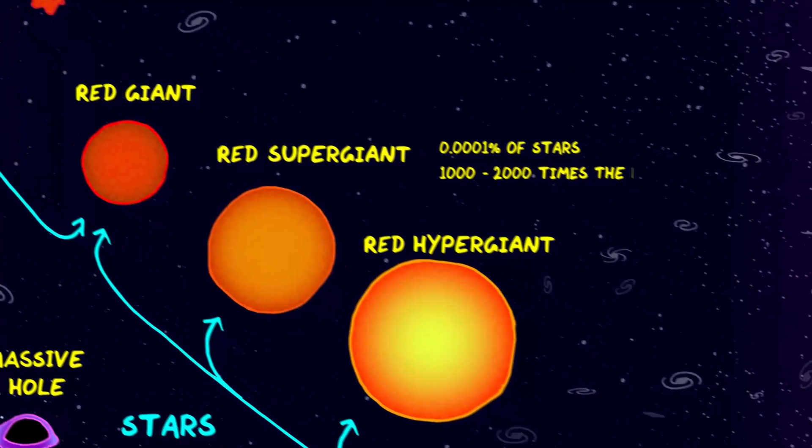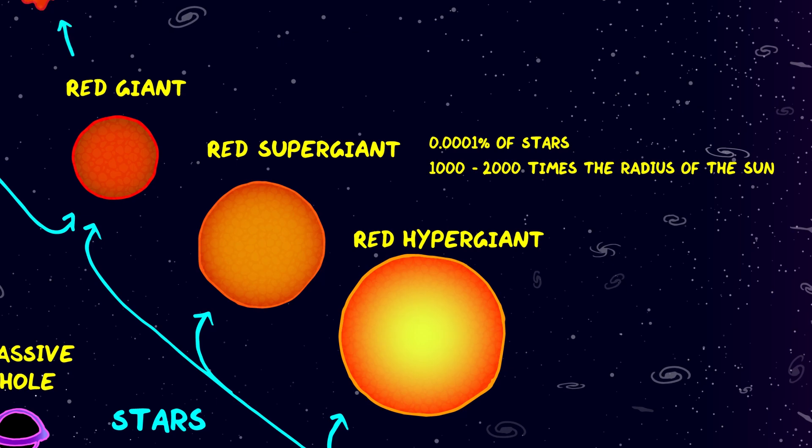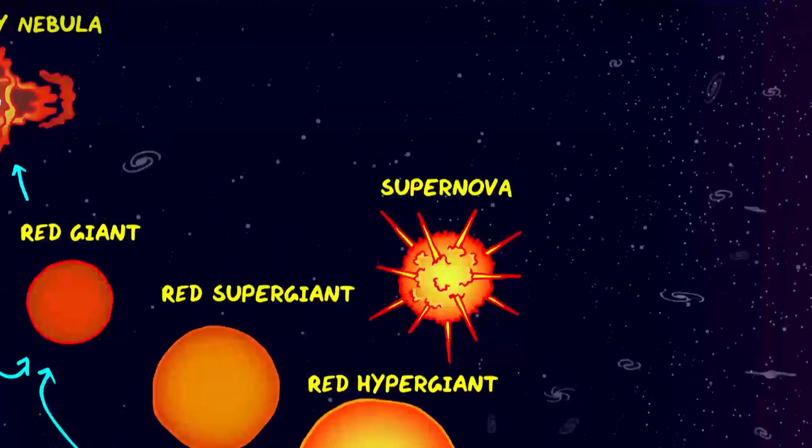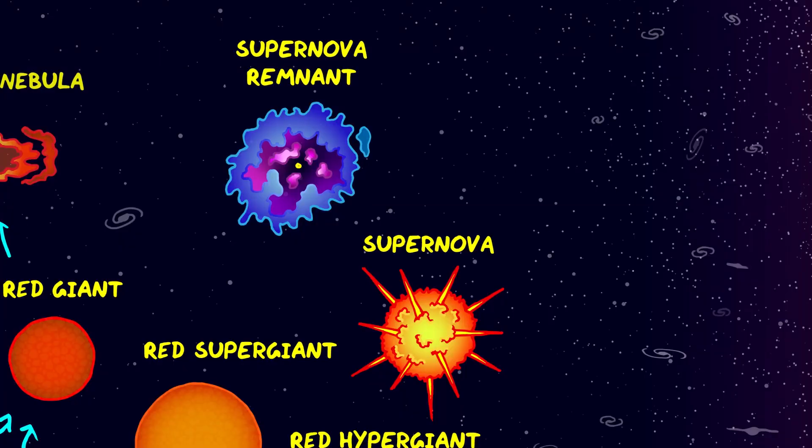For the truly massive stars, a different cosmic journey awaits. The red super and hypergiants have much shorter lives of only 3 million to 100 million years. These colossal stars with radiuses 100 to 2000 times that of the Sun end their lives in a humongous explosion known as a supernova, where they throw off their outer layers into a nebula known as a supernova remnant, while the core collapses into either a neutron star or a black hole.